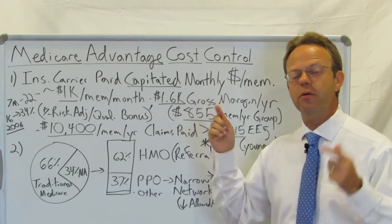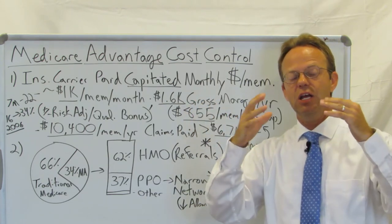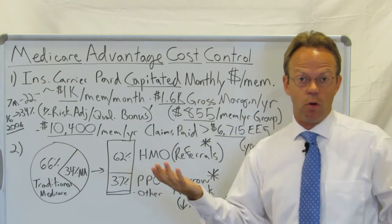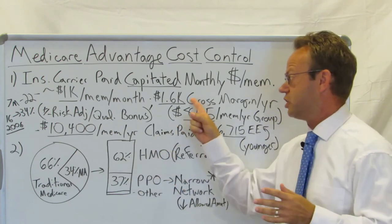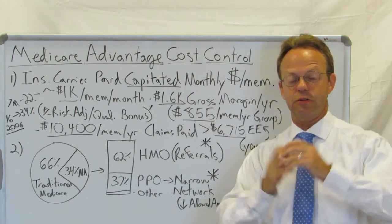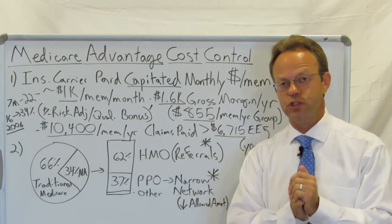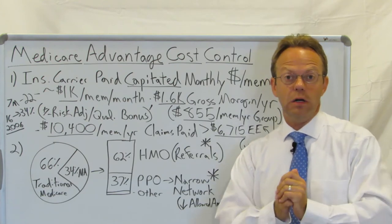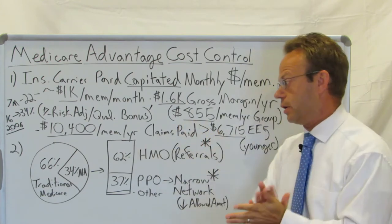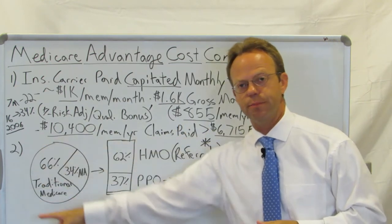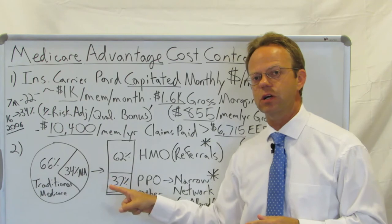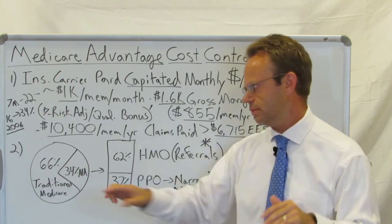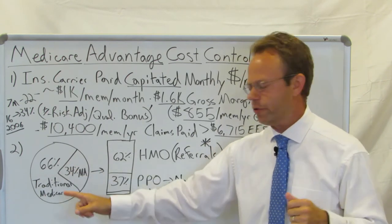The commercial insurance plans — the more that they can control costs, the more money they make, so that margin is going to go up either by paying less for health care services, having fewer services paid for, or getting people healthier. Here is a breakdown: 66% of folks are on traditional Medicare, and 34% are on Medicare Advantage.